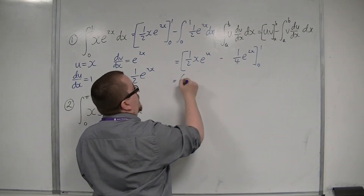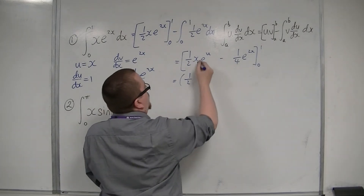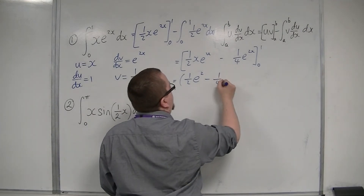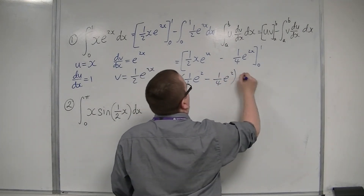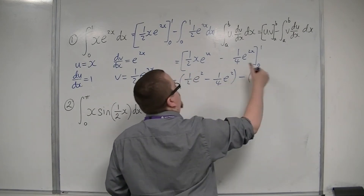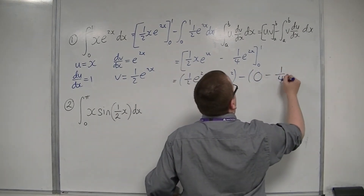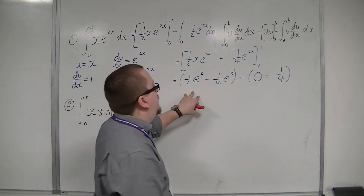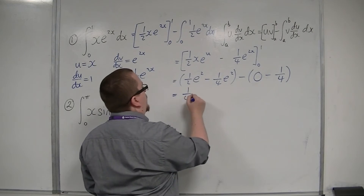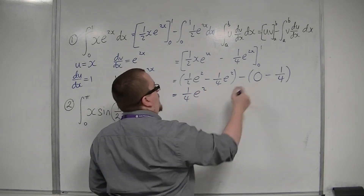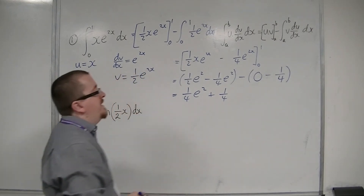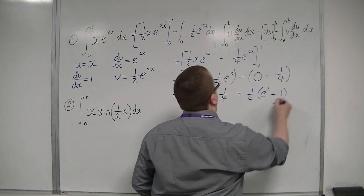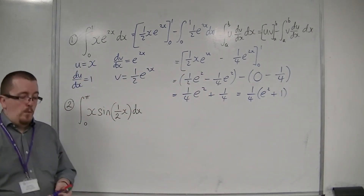Now I can evaluate. We've got one half substituting in 1, times 1, times e to the 2x — so e to the 2 — take away one quarter e to the 2. Take away: when 0 is substituted in, I get 0, take away one quarter times e to the 0, which is just 1. So one half e to the 2 take away one quarter e to the 2 is one quarter e to the 2, and then I've got plus one quarter. So you can write it as one quarter e to the 2 plus one quarter, or as one quarter times (e to the 2 plus 1).